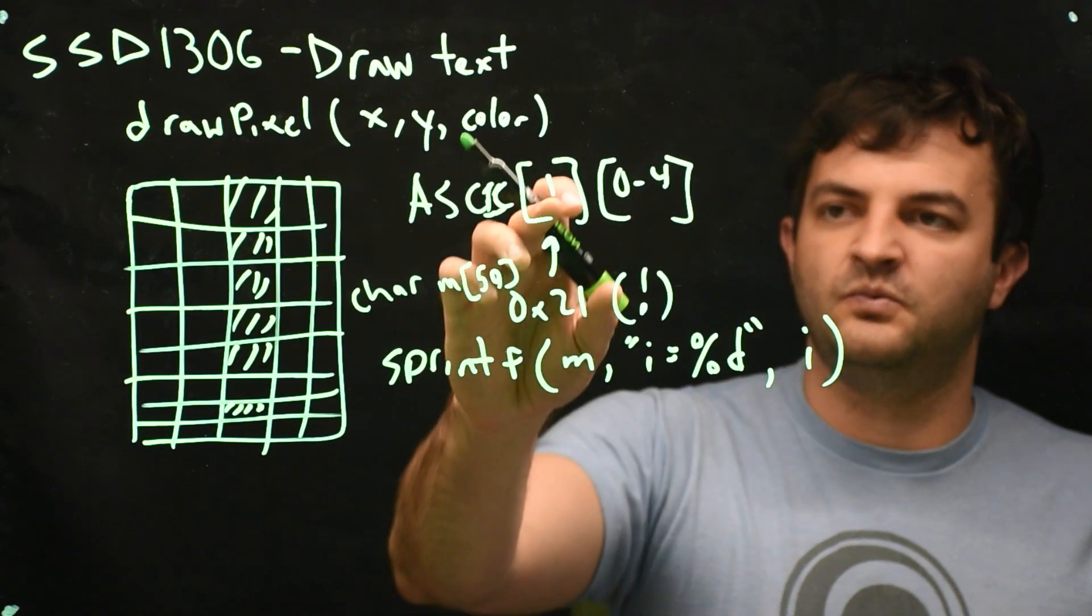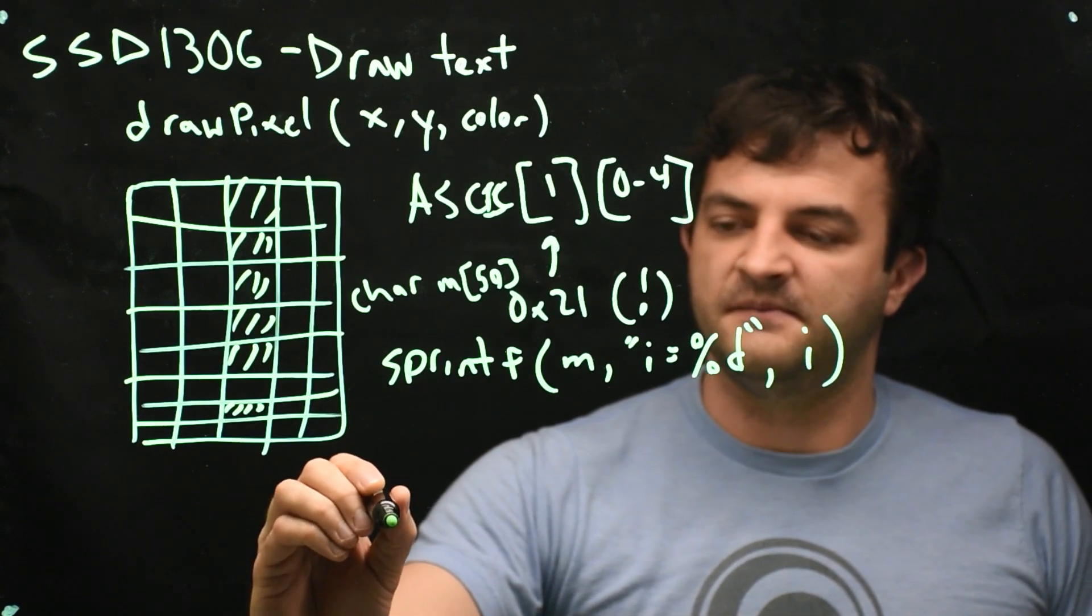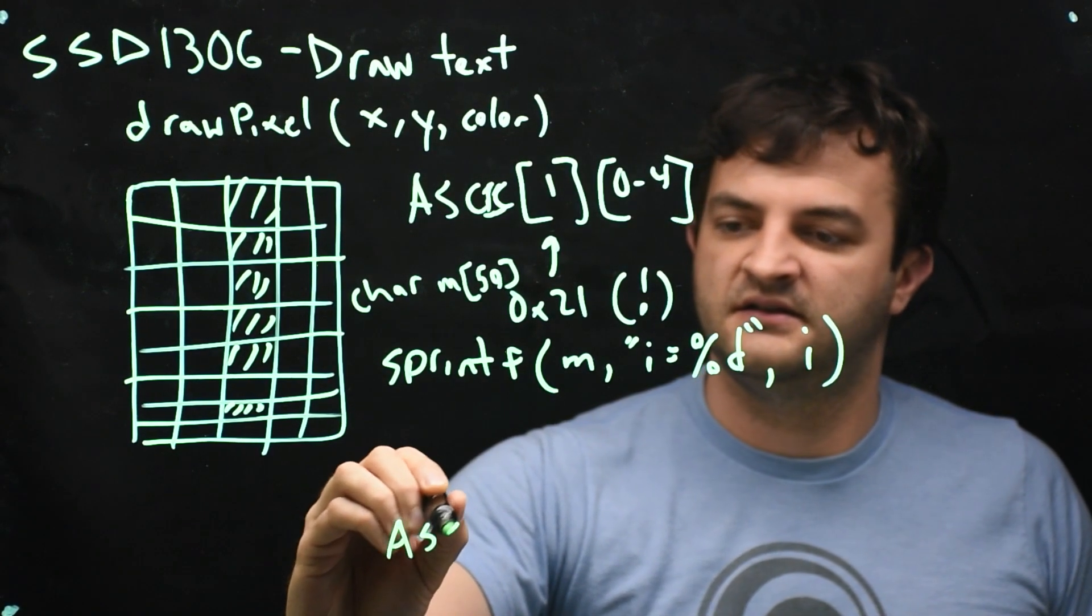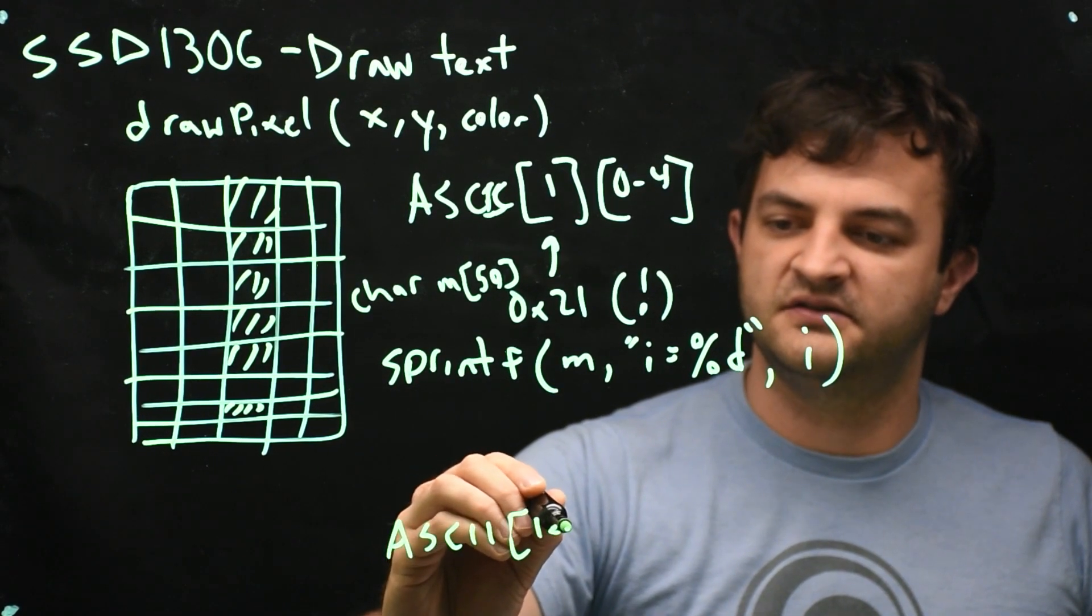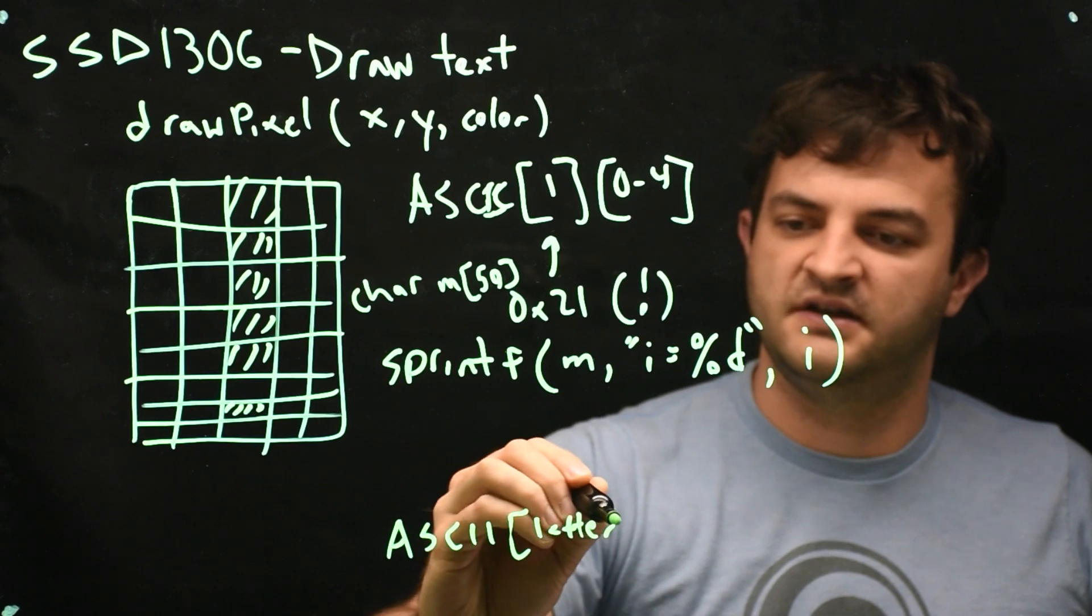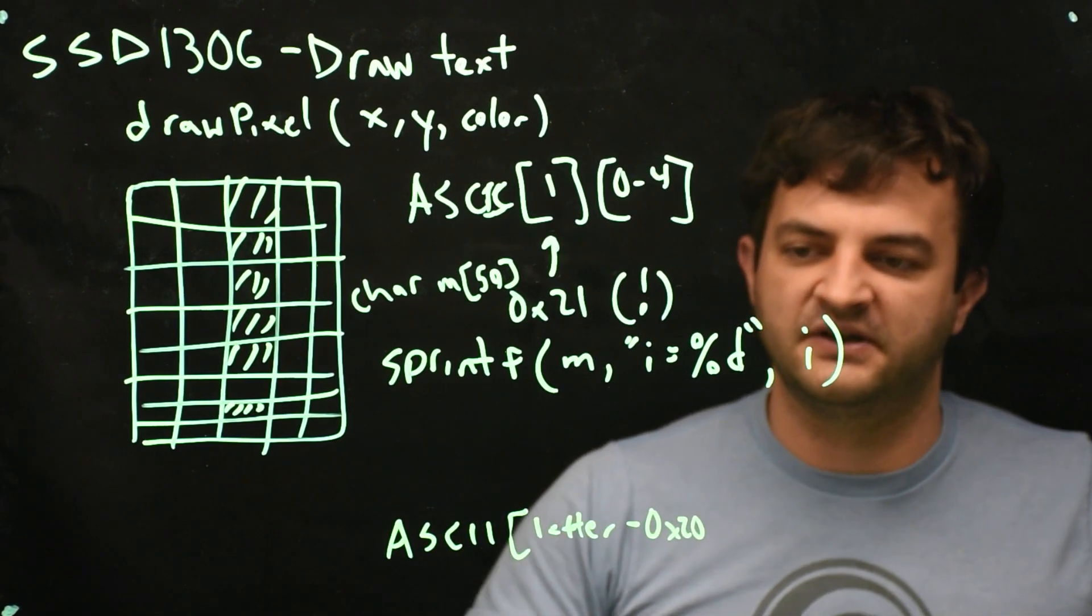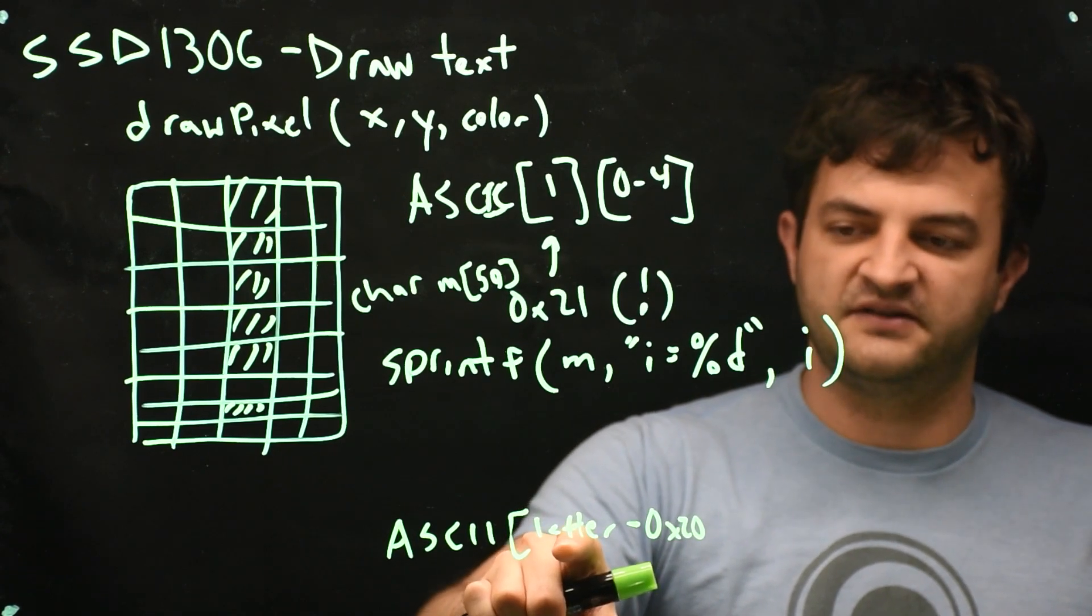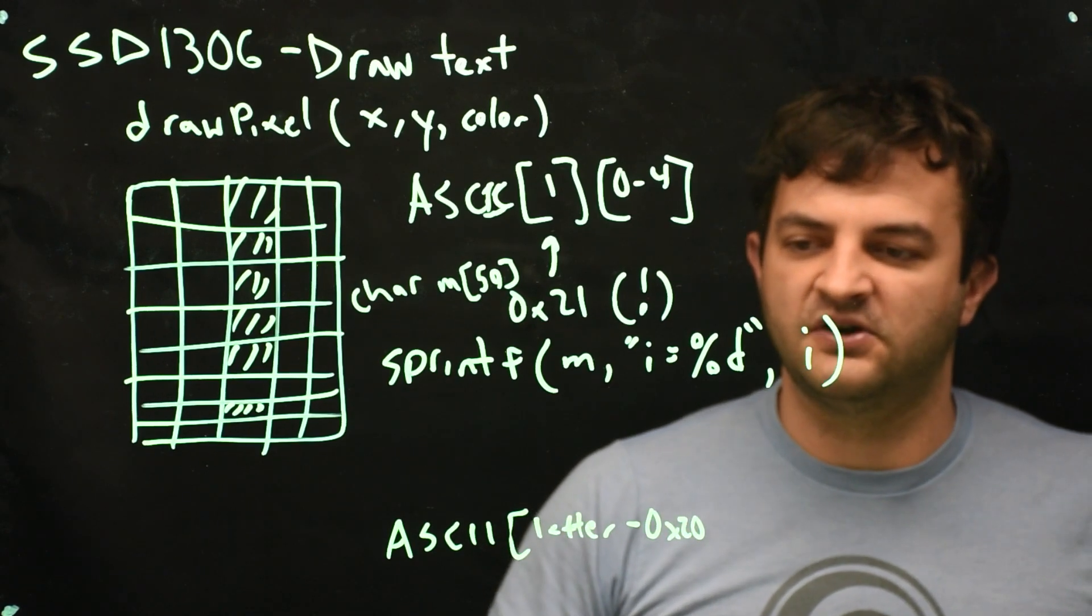So what I'm looking for is ASCII of my letter. So I'll call it letter minus hex of 20. So I need to kind of shift everything down by 20. So the exclamation point is hex 21, but it's the second element of our table. So I need to subtract that shift off.